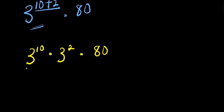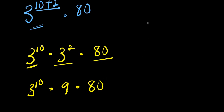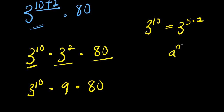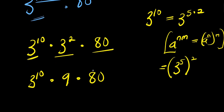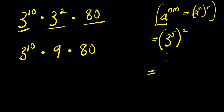We need to find 3 to the power 10 times 3 to the power 2, which is 9, times 80. For 3 to the power 10, we express it as 3 to the power 5 times 2, and applying the power rule, that becomes 3 to the power 5, squared. The value of 3 to the power 5 is 3 times 3 times 3 times 3 times 3, which equals 243. So we have 243 to the power 2.